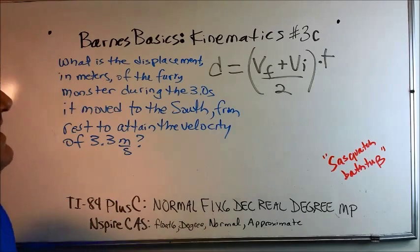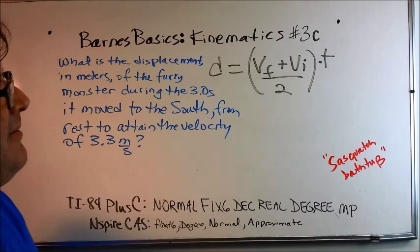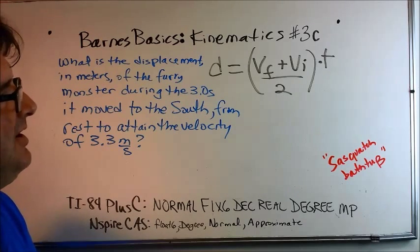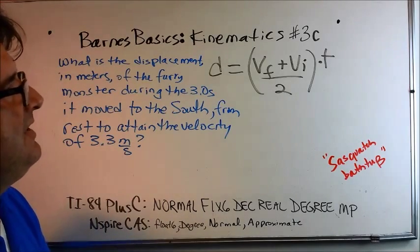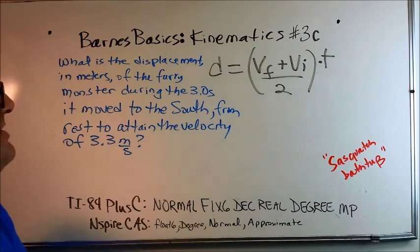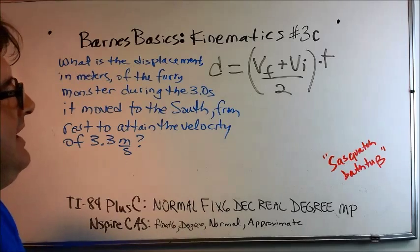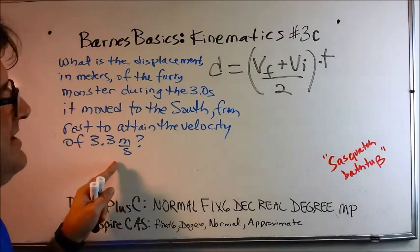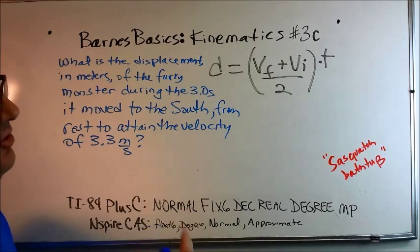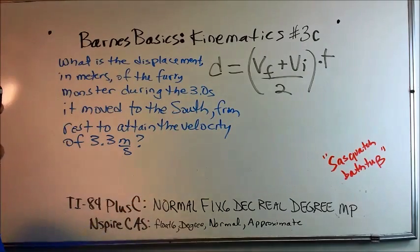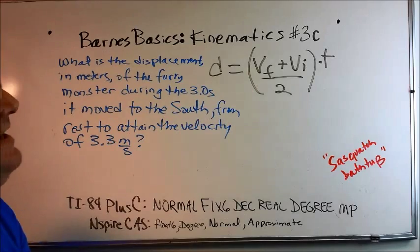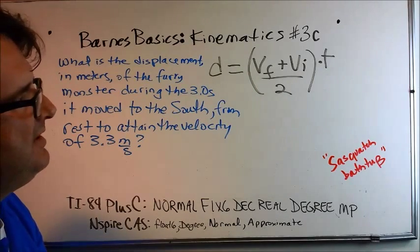In this problem set, I am tracking a Sasquatch monster. In problem 3b, it took a flash with a camera and it startled the monster and it took off. In the last problem, we measured the final velocity. In this one, we're trying to see how far did it travel during this time if it attained the speed of 3.3 meters per second.